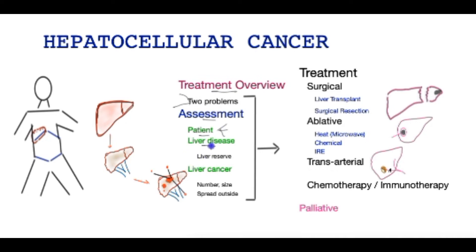In terms of the liver disease, there are several parameters that assess the underlying liver reserve — how much of the liver is damaged and how well the remaining liver can sustain the body's function. This is done by means of composite scoring systems called the Child-Pugh criteria or the MELD score, and the liver may be graded as good, intermediate, or poor liver function reserve.